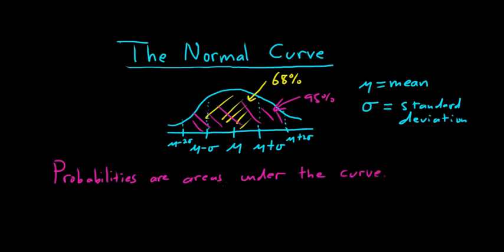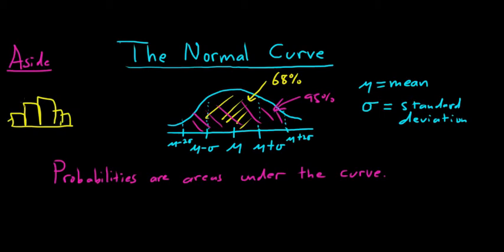You might be wondering what this has to do with the real world. In the real world, you don't really have a perfect normal curve — all you have is data. So if you take a bunch of data and make a histogram, and your histogram looks roughly bell-shaped, you can use all of the theory we'll learn in statistics regarding the normal curve and apply it to the real world. Obviously, this is an approximation, so we can expect our results to just be approximations.